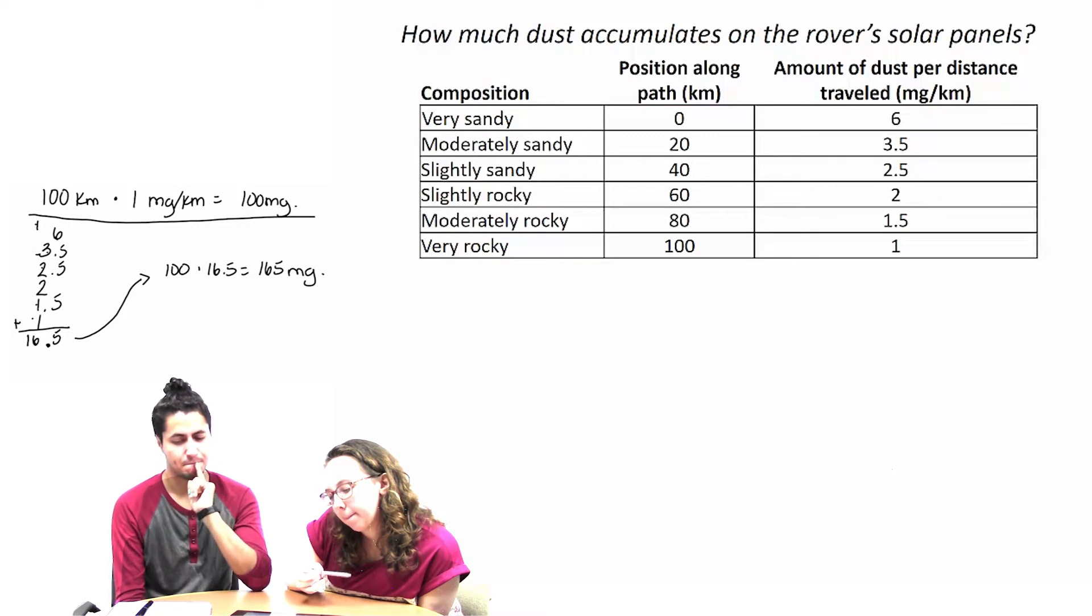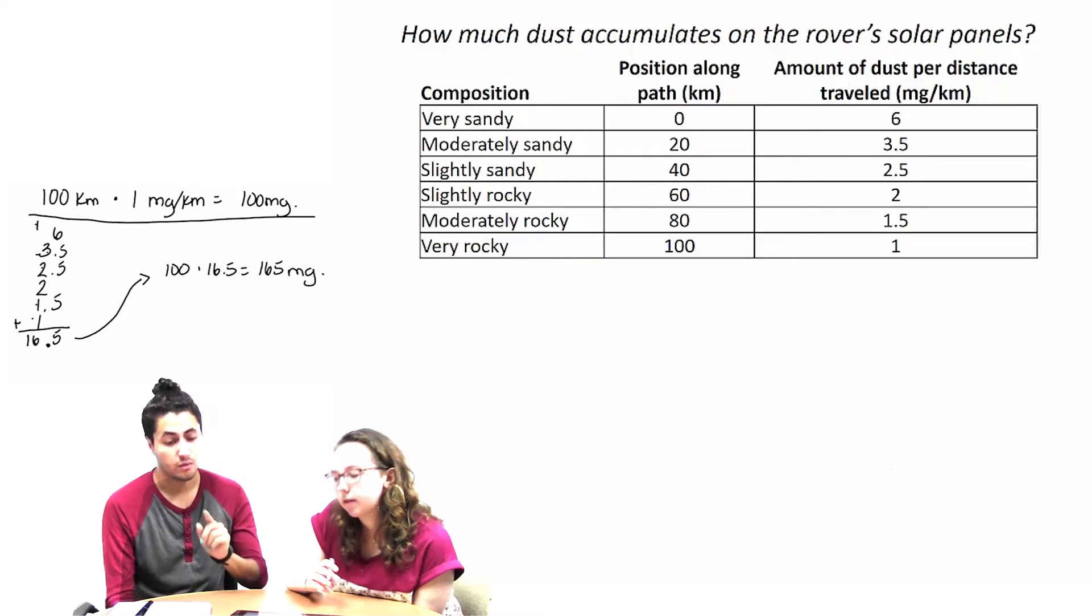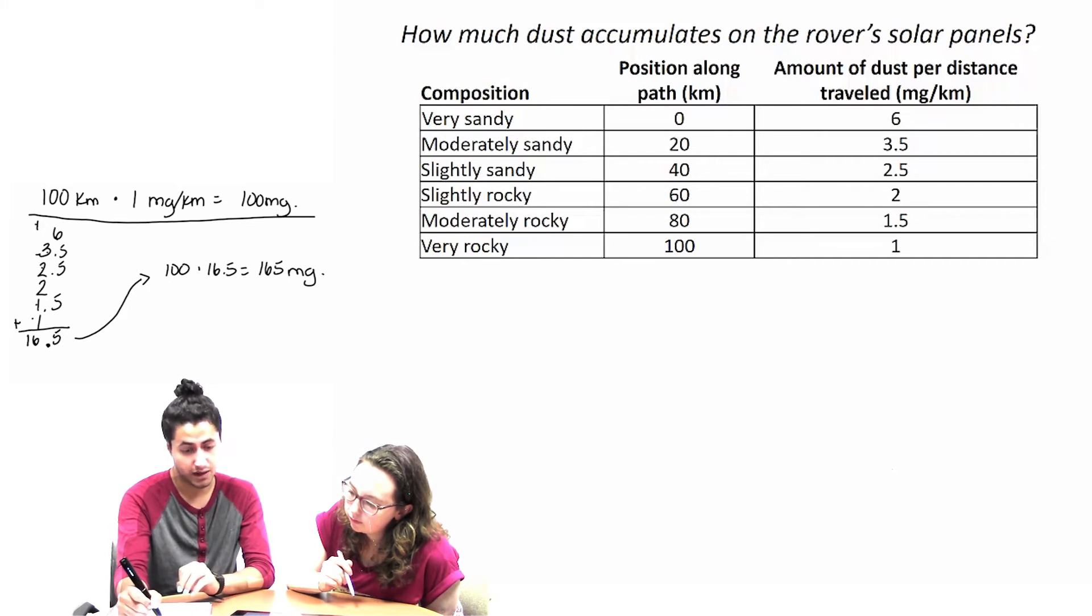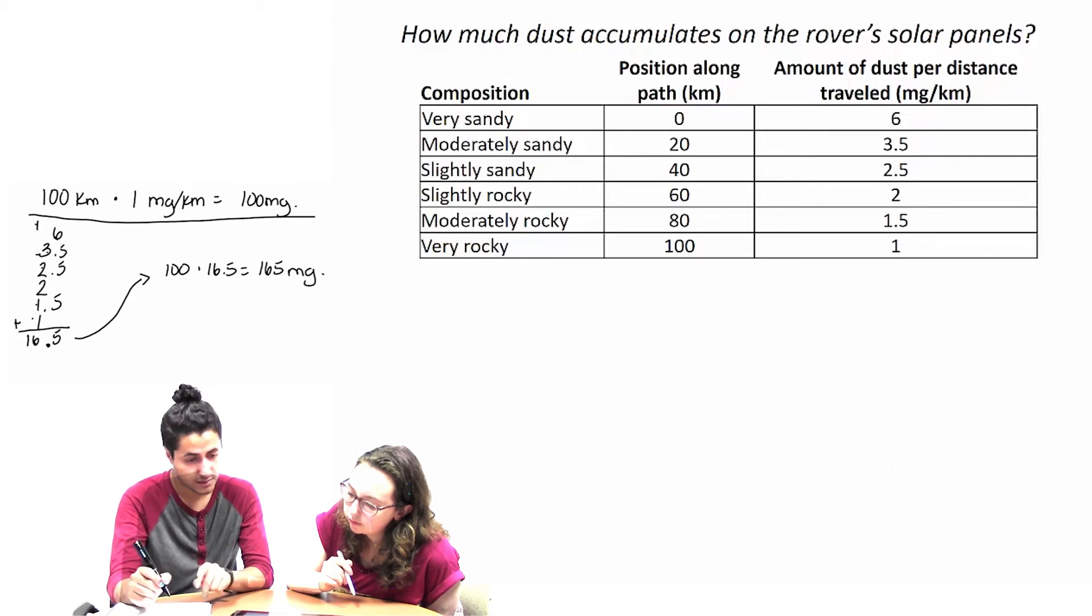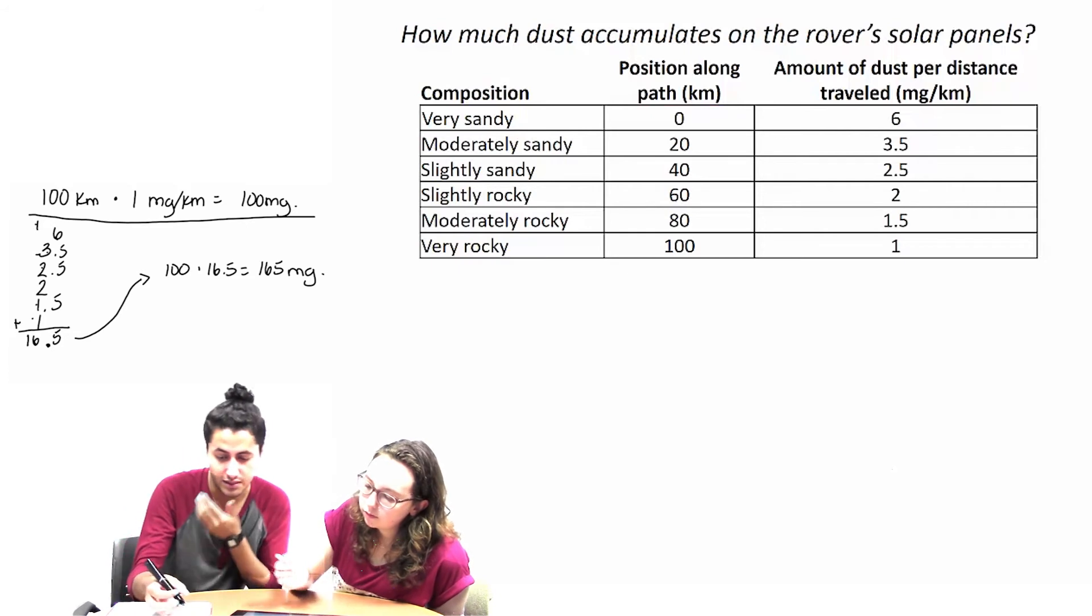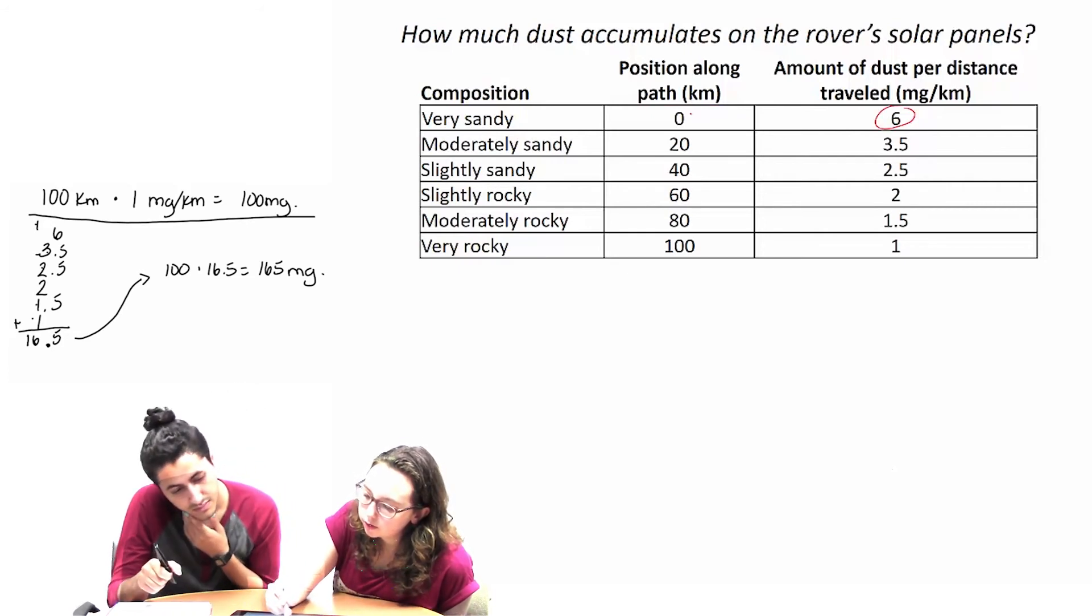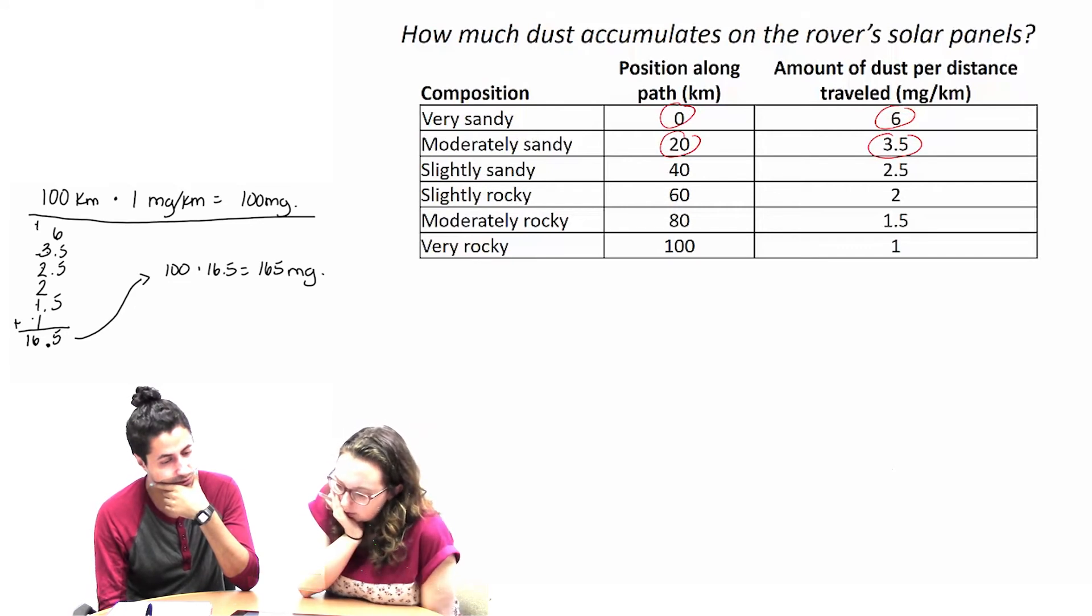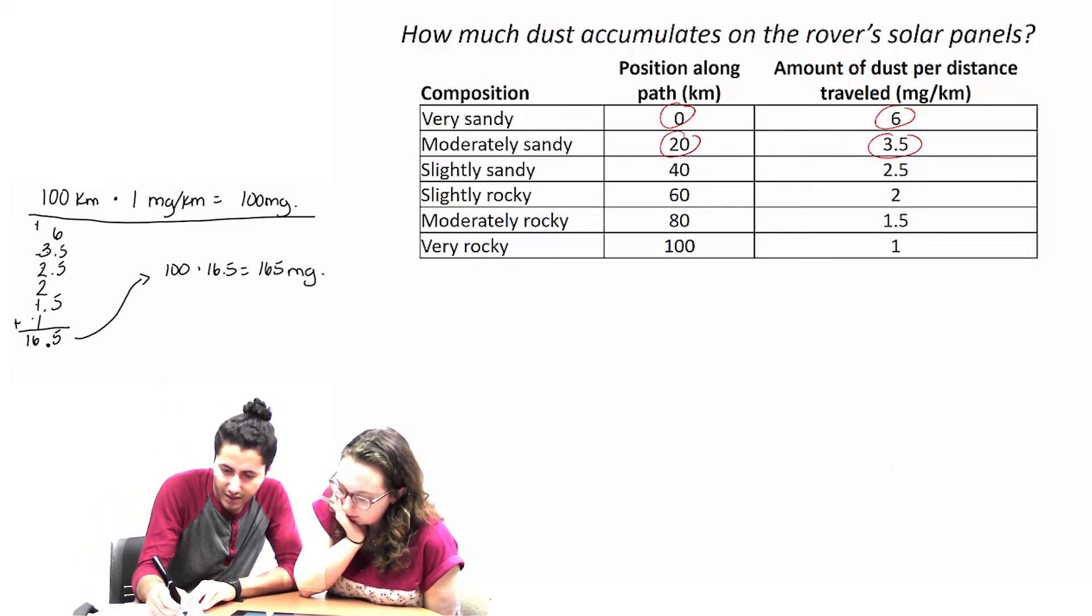What if, okay, what if instead of adding them up and then multiplying it by 100, what if we multiplied the rates by the position along the path? So like, 6 and 0? Yeah. Okay. So what if we did that instead? Let's see what we would get. I'm going to write it 6 times 0 plus... Does that seem right?